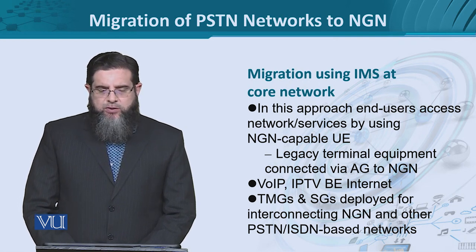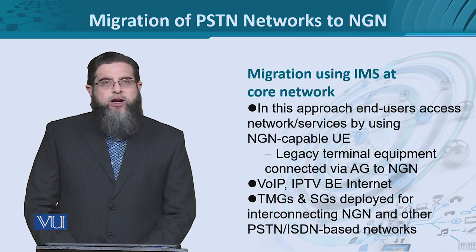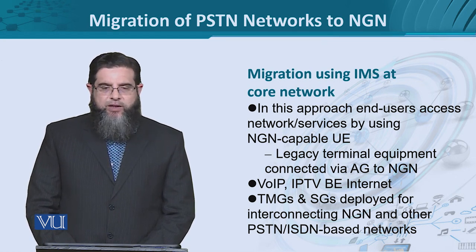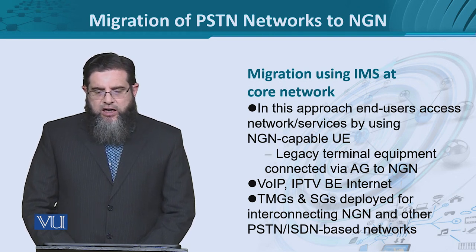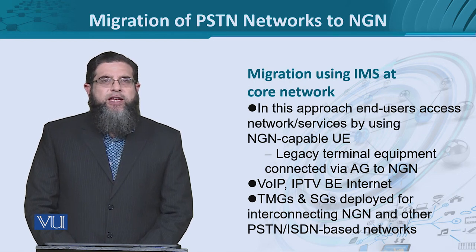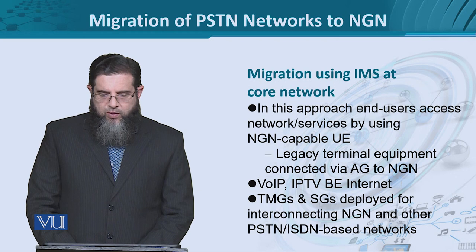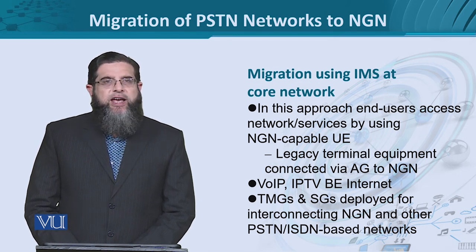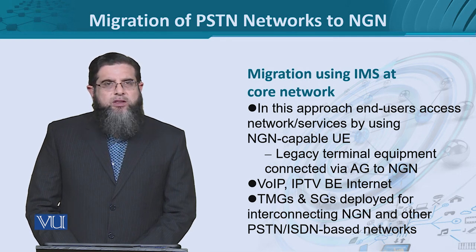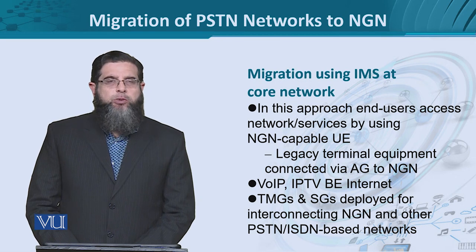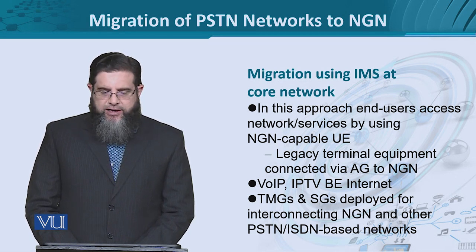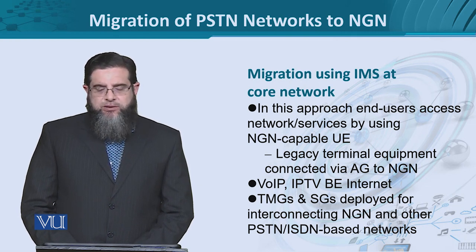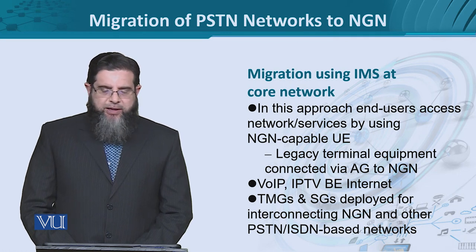Instead of using a call server, we could replace the core network functionality with a complete IP Multimedia Subsystem, which is used in NGN. In this approach, the IMS integrates seamlessly with NGN — end users access services using IMS with NGN-enabled user equipment, or legacy terminal equipment can be used via the access gateway. Services that become readily available include Voice over IP, IP television with a certain QoS grade, and best-effort internet service.